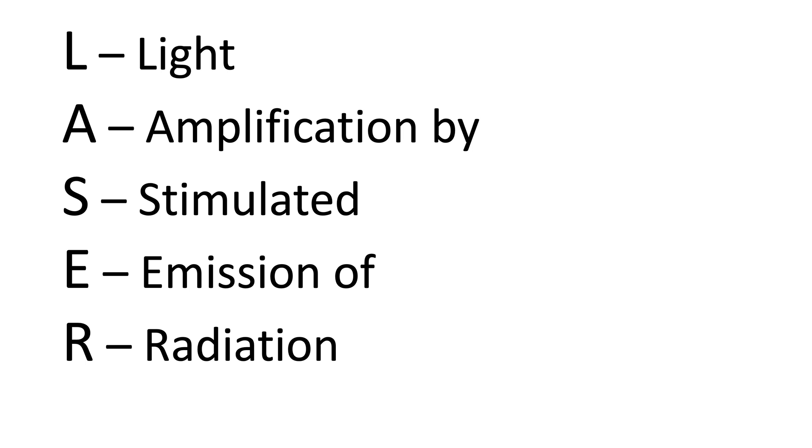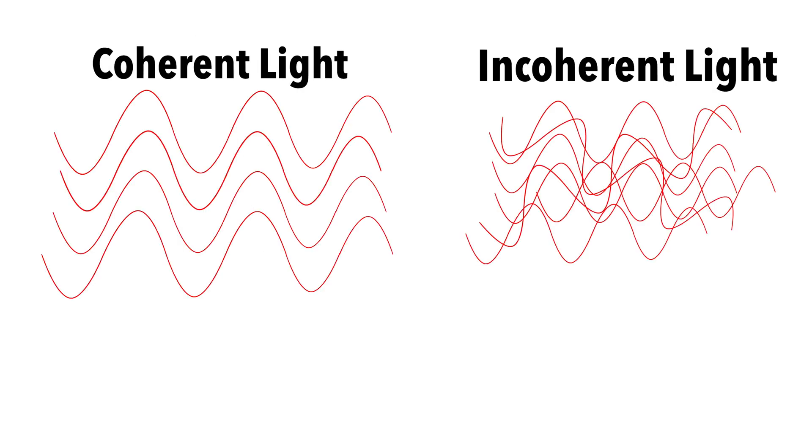So what is so special about a laser? Lasers are very special devices because they work on the basic principle of coherence. Do you see this picture? It shows two kinds of light. On the left side, we have coherent light. And on the right side, we have incoherent light.